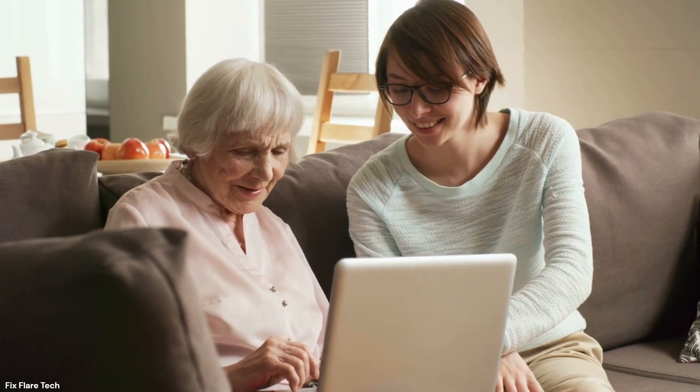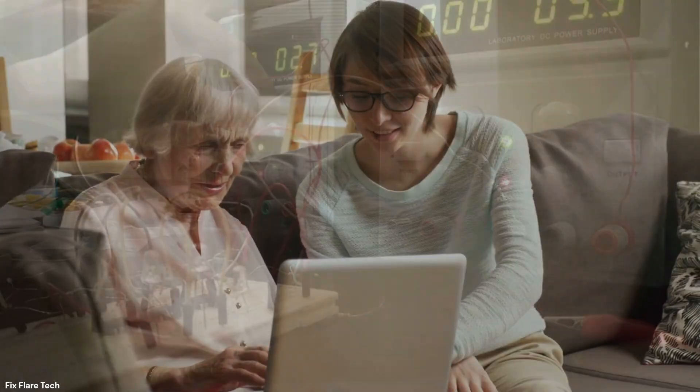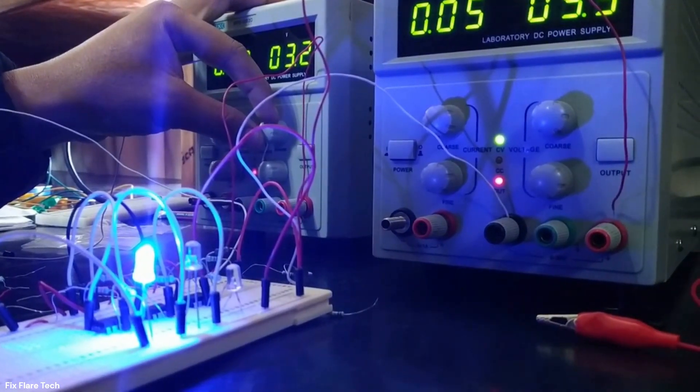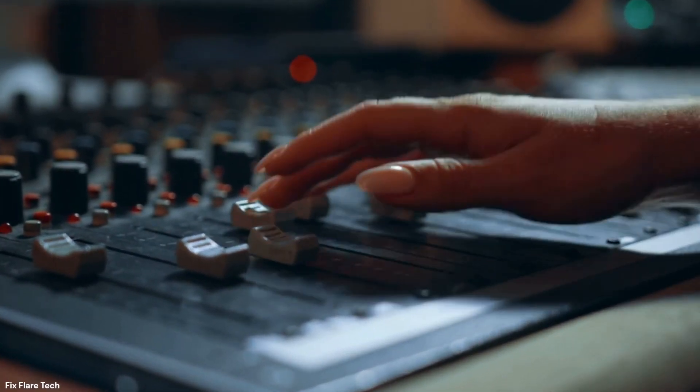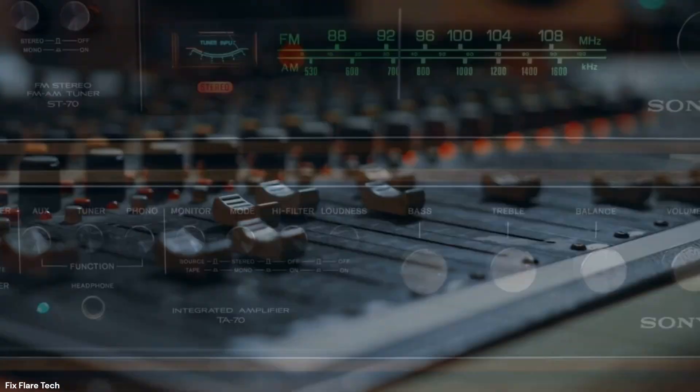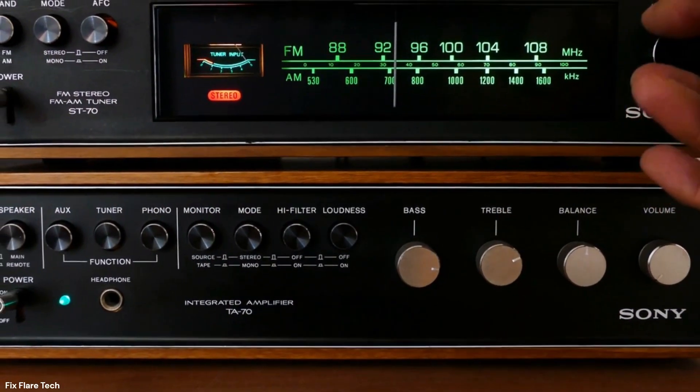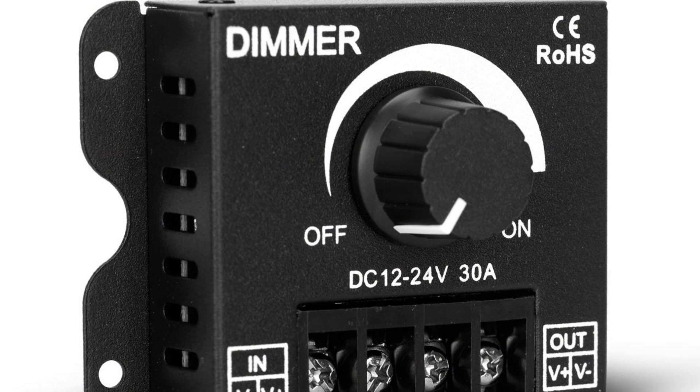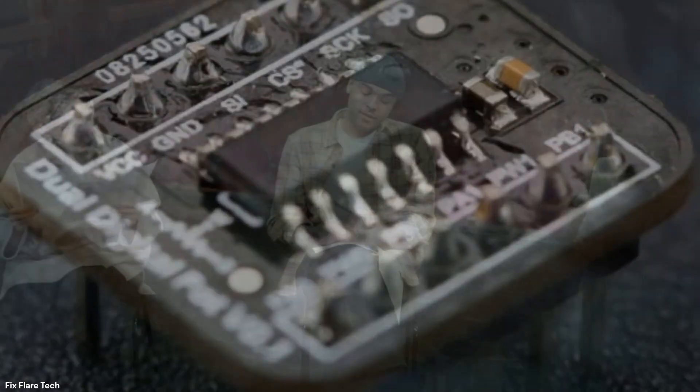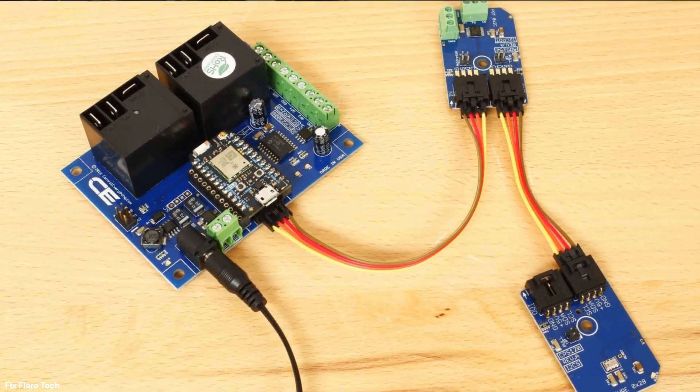But how does this all translate into practical use? Well, by controlling the resistance, we're able to control the voltage. This is vital in many electronics where precise voltage control is needed. Think about an audio amplifier where the volume needs to be adjusted, or perhaps a light dimmer where the brightness is tweaked. In these scenarios, a digital potentiometer is a perfect fit.